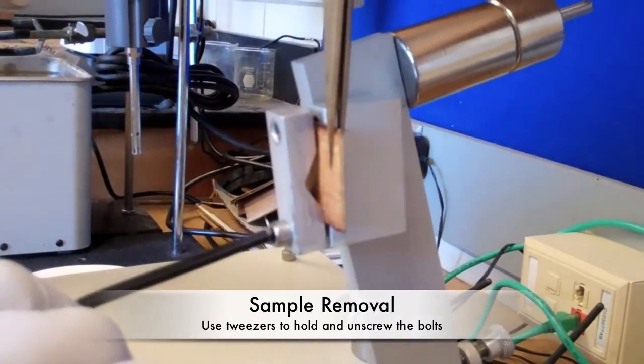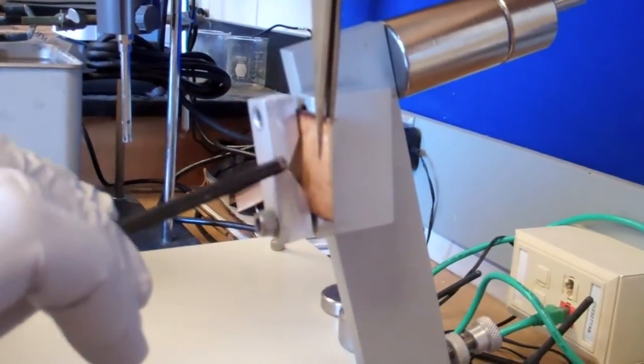To remove the sample from the gate, use a pair of tweezers to hold the sample and unscrew the gate.